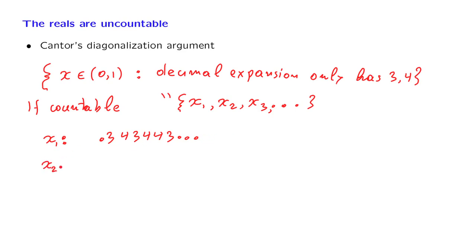Suppose that the second number is of this kind, and it has its own decimal expansion. Suppose that the third number is again with some decimal expansion, and so on.